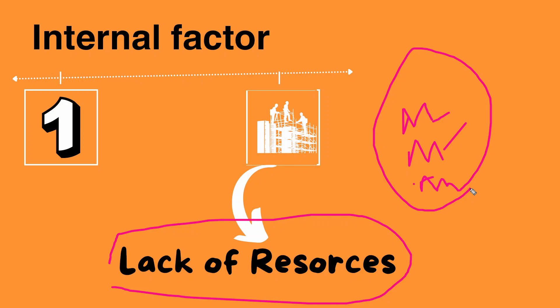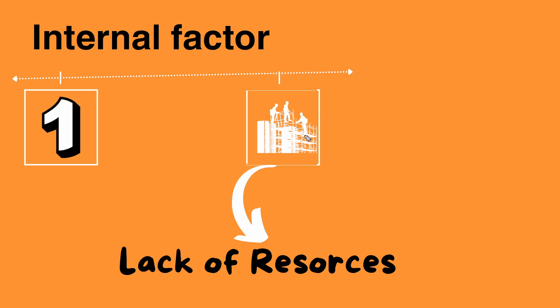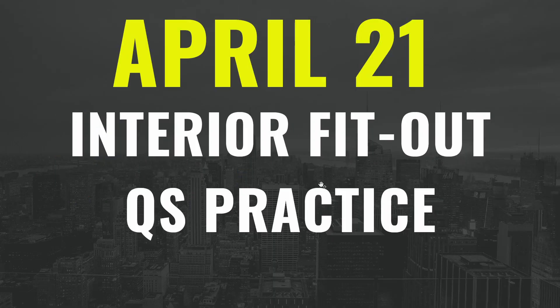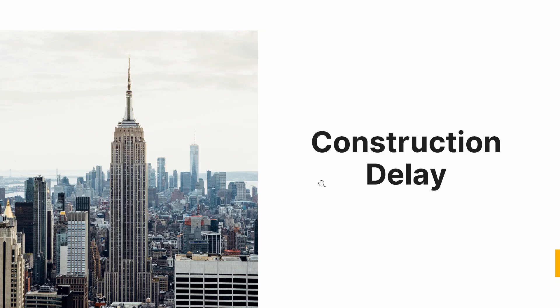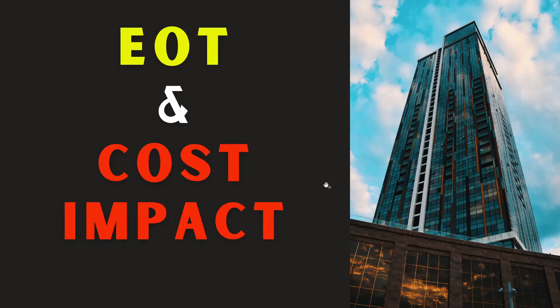We have to consider new construction activities. If we are ready to do all the activities — material, manpower, and machinery — with very proper tracking, we can deliver the project on time. This is what EOT, extension of time and cost impact, is all about. Construction delay is the best example when discussing EOT and cost impact.